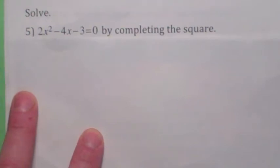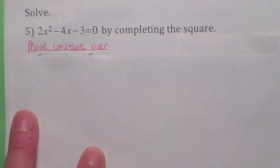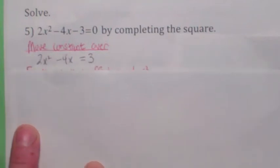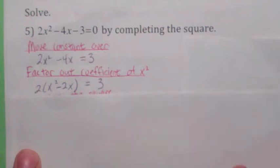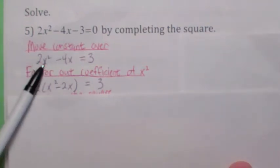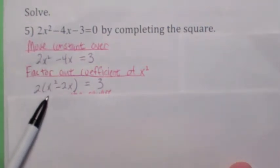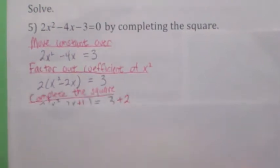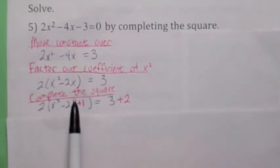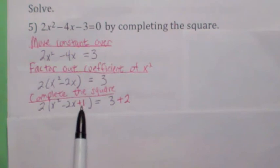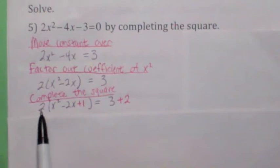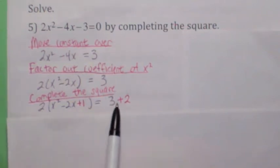There are several different ways of doing this. I'm going to first move the constant over to the other side by adding 3 to both sides. Then I'm going to factor out the 2 — 2 is the coefficient of x squared — from each of these two terms. Then I'm going to complete the square inside the parentheses. Remember how to do that? You take half the coefficient of x, which would be negative 1, and you square it — that gives you 1. That's the magic number that makes this into a perfect square. What did you really do? You didn't add 1; you actually added 2, because of this 2 out here. So you've got to add 2 to the right side as well.